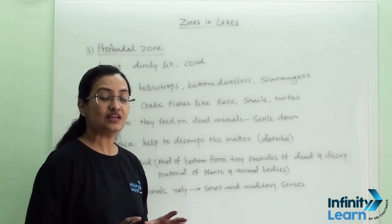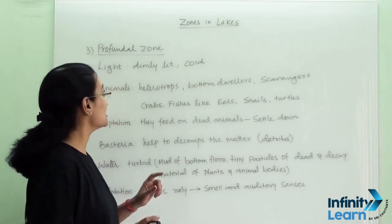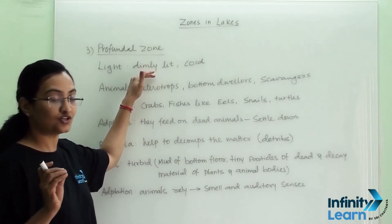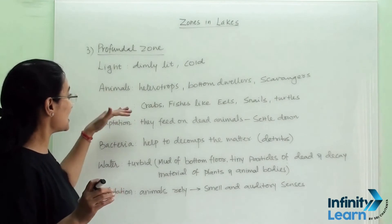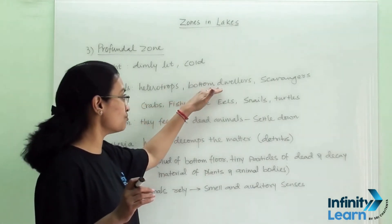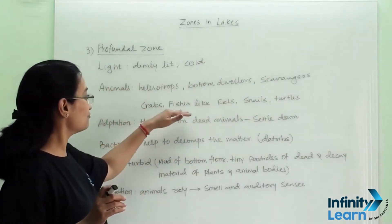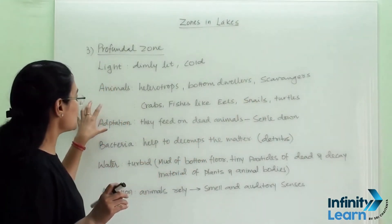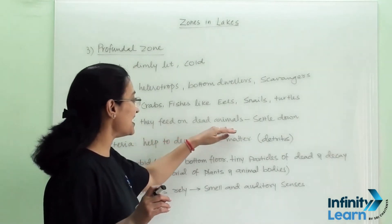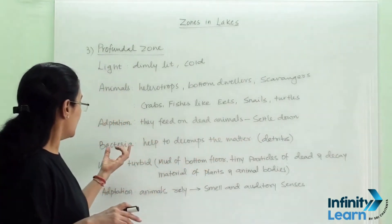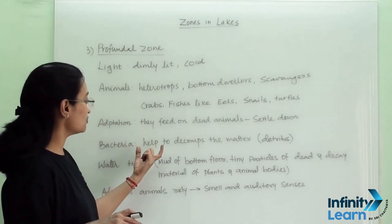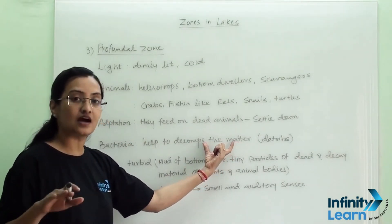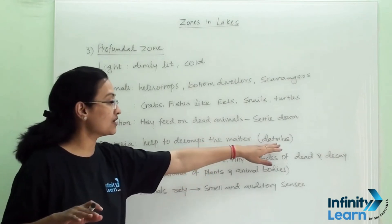Our third zone is dimly lit and very cold — it is called the profundal zone. Very little, and almost no, light reaches this region and it is very cold. Animals found here include chironomid larvae (bottom dwellers and scavengers), crabs, eels, snails, and turtles. Their adaptation is that they feed on dead animals that settle down at the bottom. Bacteria are also present in this zone and help decompose dead animal and plant organic matter that settles at the bottom, known as detritus.